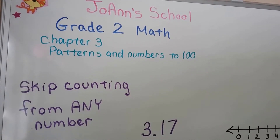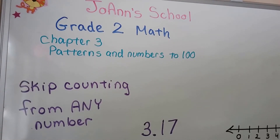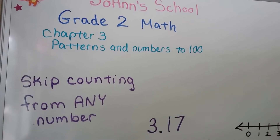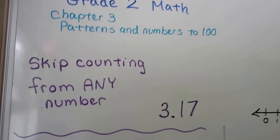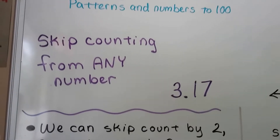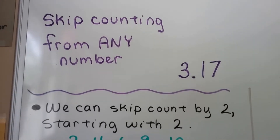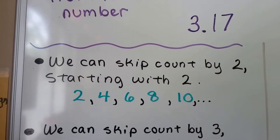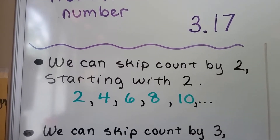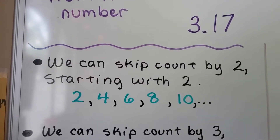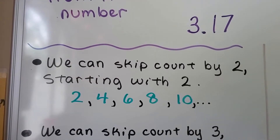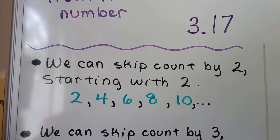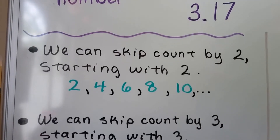Skip counting from any number. Lesson 3.17. We can skip count by two starting with two: two, four, six, eight, ten. We skip over the numbers in between them — we skip by twos.